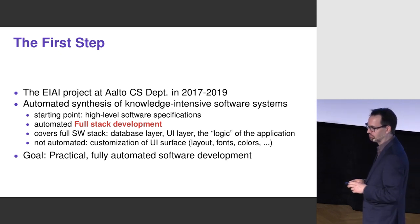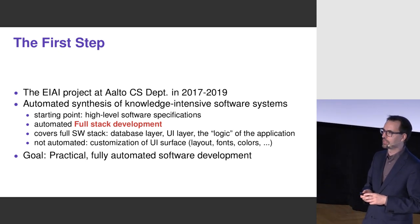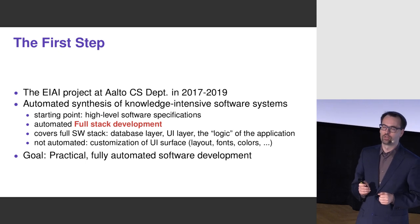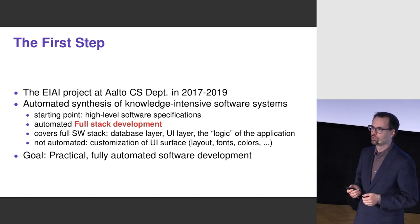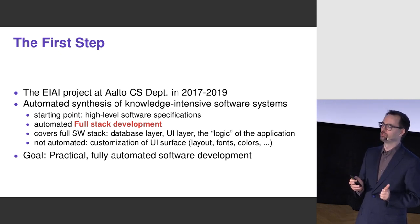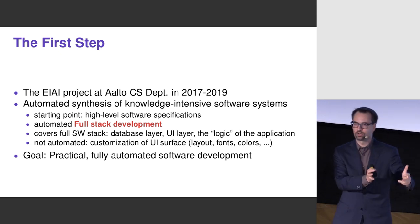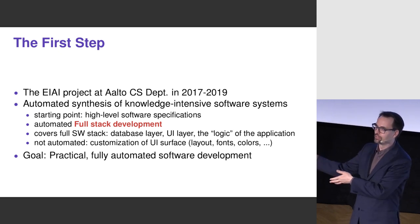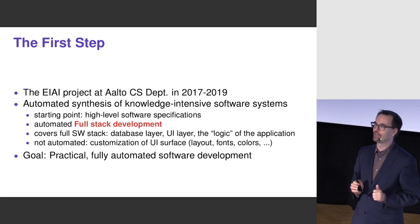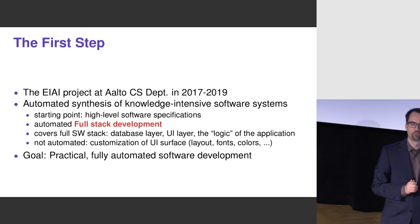The setting where I have been doing this is a project I have been running at our computer science department for the last couple of years. We produce the most common kinds of software systems — web applications, information systems, and the kind of software many of us use daily at Aalto and elsewhere. We have a very high-level specification language for describing the functionalities of these software systems, and from that specification we generate fully functional software ready to be deployed with very high automation. Once we've described the functionality, everything is automated until the running software, except things like how the user interface looks.